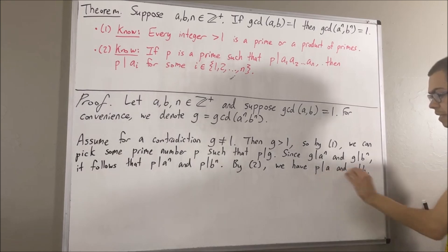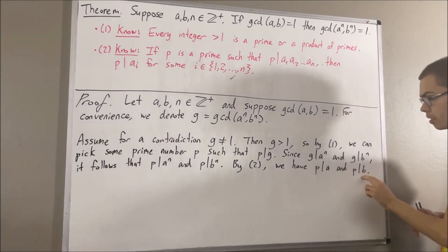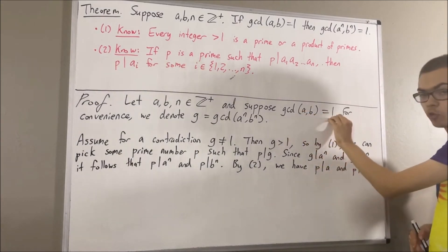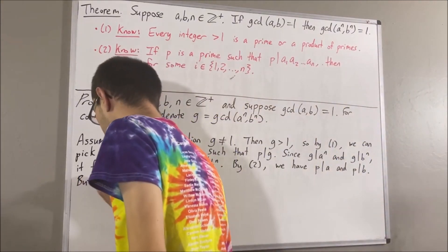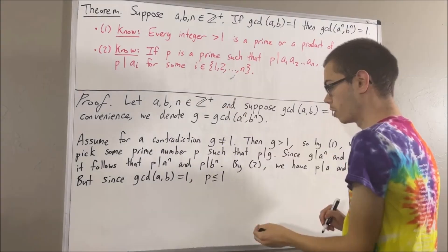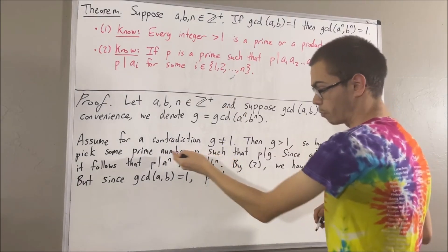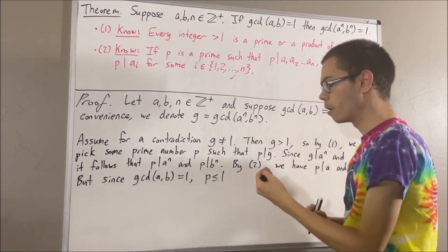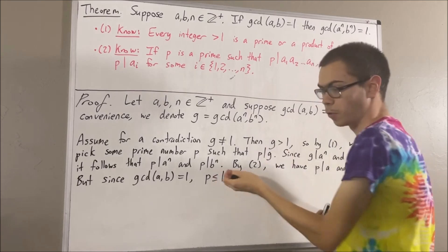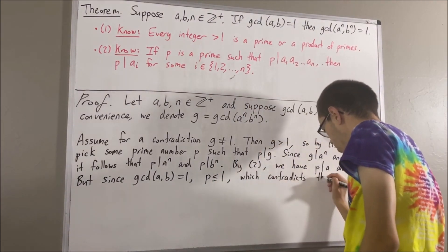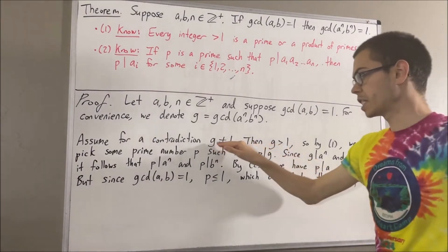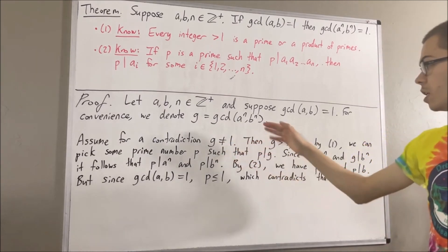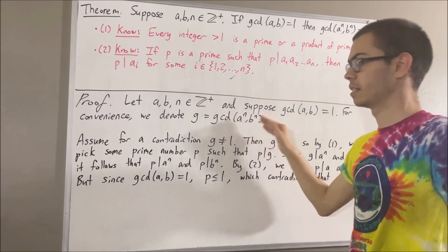So we see that p is a common divisor of a and b. But since 1 is the greatest common divisor of a and b, 1 must be greater than or equal to p. So p is less than or equal to 1, and since p is a prime number, this means p is a prime number less than or equal to 1. But there are no prime numbers less than or equal to 1, so we've reached a contradiction. Our assumption that g is not equal to 1 leads to a contradiction, so we must instead have that g is equal to 1. In other words, the greatest common divisor of a to the n and b to the n is equal to 1.